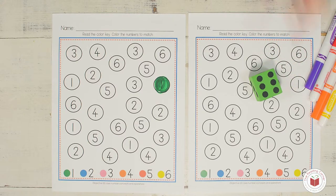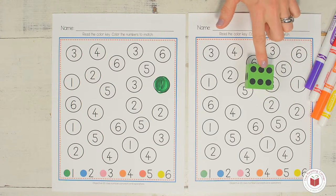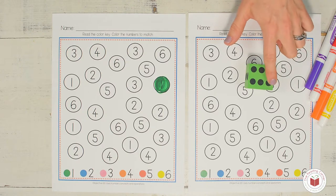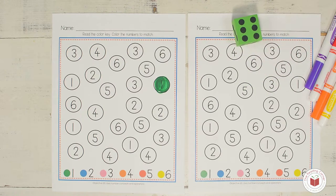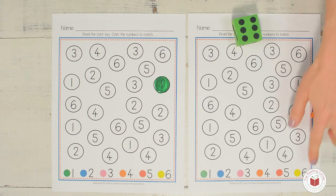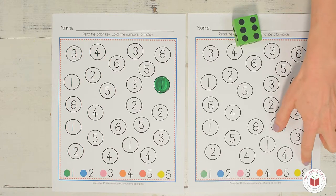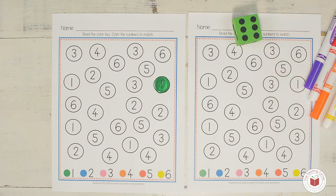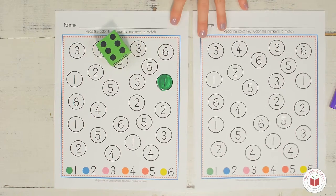Roll the dice. One, two, three, four, five, six. You're going to find the six. What color do I need to color that six? That's right, yellow. So you would color it yellow. Then it would be my turn to play again.